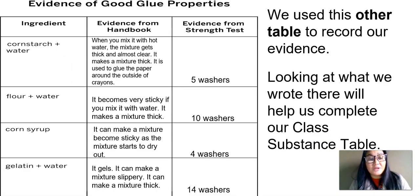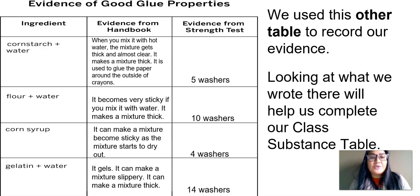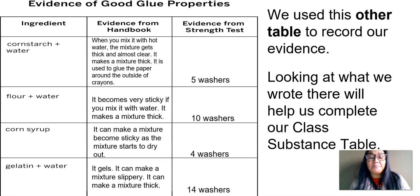In this table that we saw in our last lesson, we evaluated two different kinds of evidence: from what we read in the Handbook of Ingredients, and the results from our strength test. You can pause your video if you'd like to take a look at this and remind yourself of our results from the strength test and from the Handbook of Interesting Ingredients.